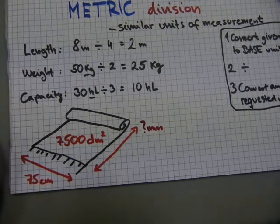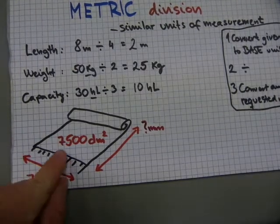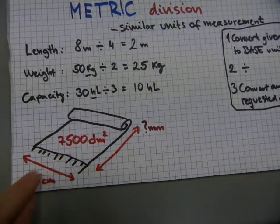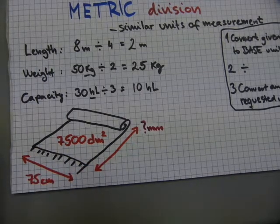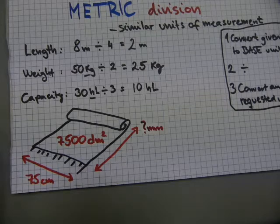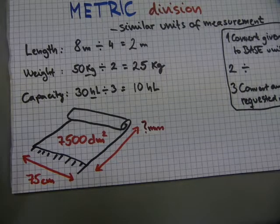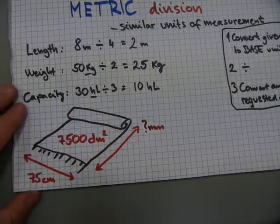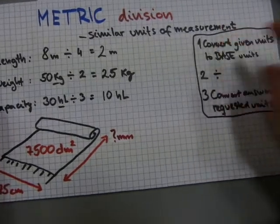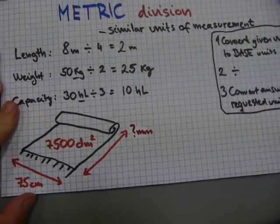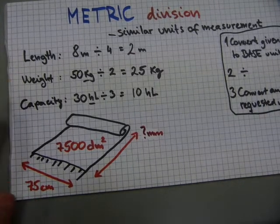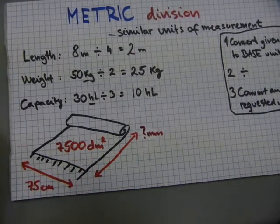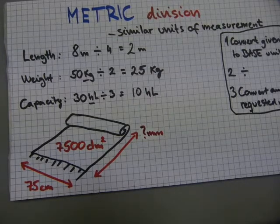And if you tried to do just the numbers alone, 7500 divided by 75 is 100. No, the piece of carpet is not 100 meters or 100 millimeters long. Forget about it. In this one, this three-step approach is needed because the outcome of the calculation is massively affected by the meaning of the units of measurement.